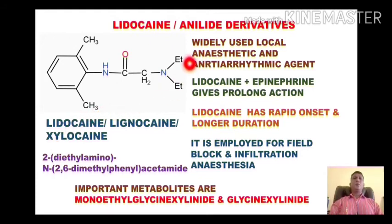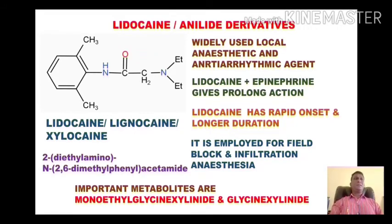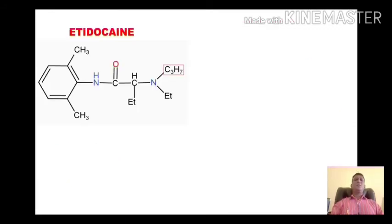Looking at the metabolic products of lidocaine: the compound undergoes dealkylation — removal of one ethyl group gives monoethylglycinexylidide as one major metabolite. When both ethyl groups are removed through dealkylation, glycinexylidide is the second metabolite. This is also an important GPAT examination question — identifying the major metabolites of lidocaine as monoethylglycinexylidide and glycinexylidide.